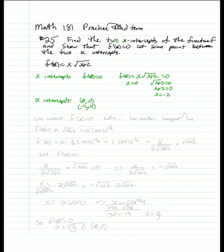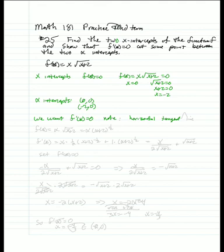So we want to find a value where f prime of x equals 0 somewhere between (-2, 0) and (0, 0). Note that this means we have a horizontal tangent line somewhere in between there.